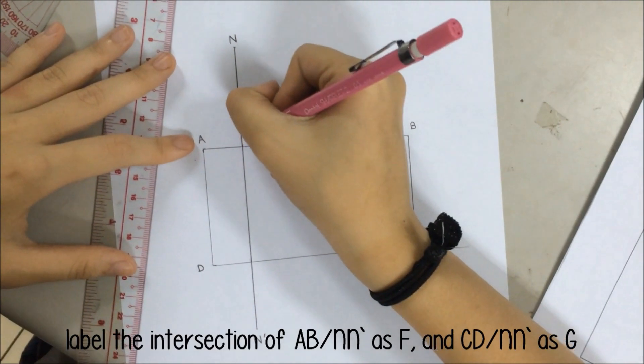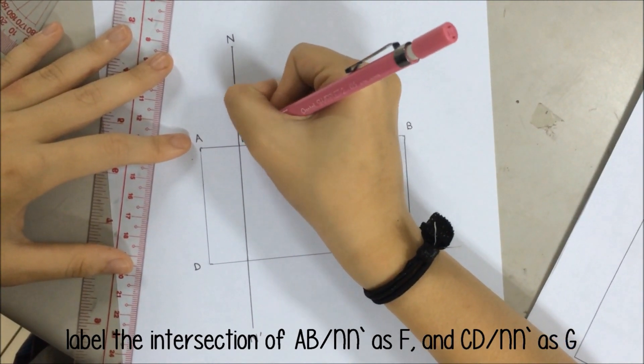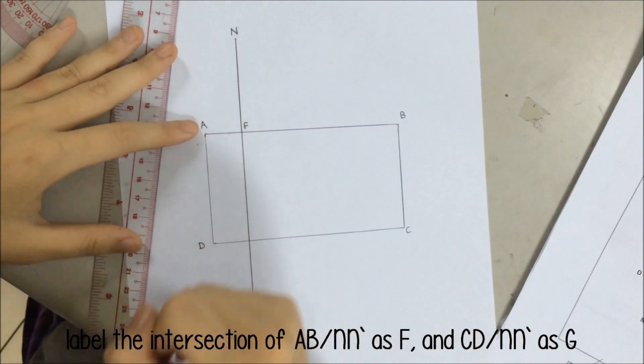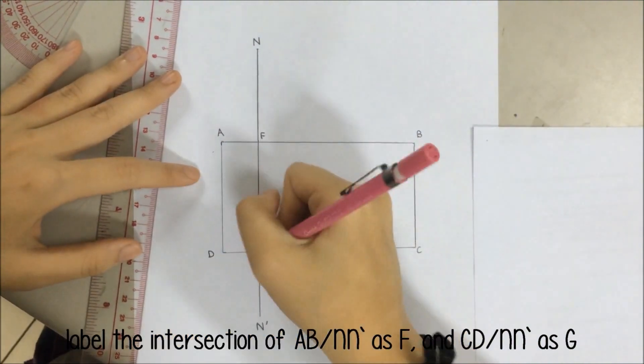Step 3: Label the intersection of line AB and line NN as F, and the intersection of line CD and line NN as G.